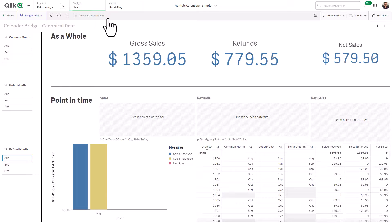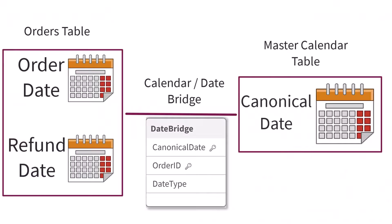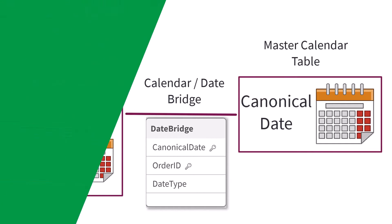As you can see, depending on how your data, dates, and charts are defined, you could get incomplete answers when analyzing data for a specific point in time. And this is where a canonical date and calendar bridge can be helpful. If you want to learn more and see how this is done, join me on my next video where I'll walk you through the process.